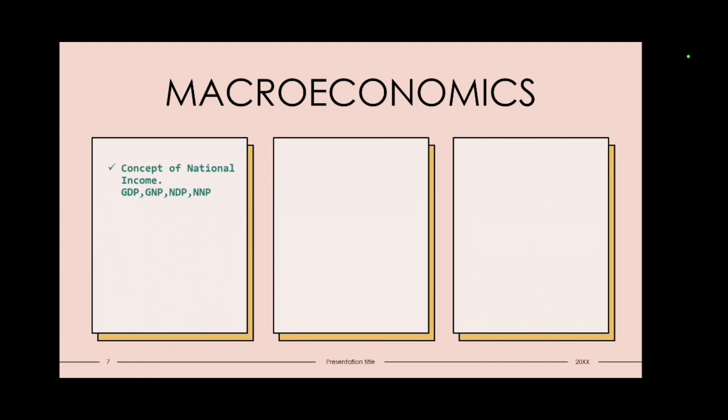Then in macroeconomics concept of national income. Under this I'll try to cover GDP, GNP, NNP, NDP. What is GDP? Like exactly what all things comes under this. So I'll try to make a video on this. Then theory of consumption. Theory of investment.